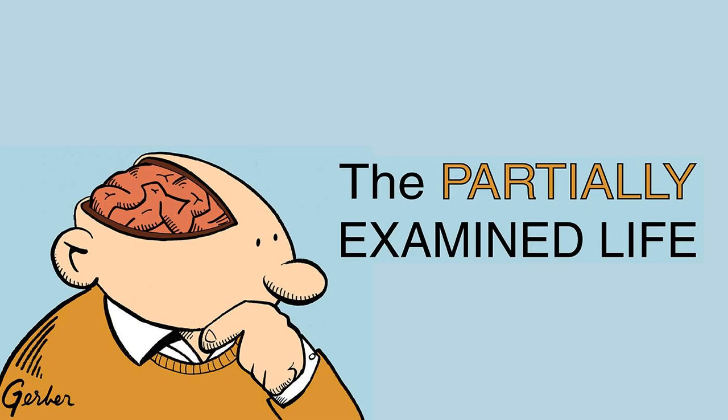You're listening to the Partially Examined Life, a podcast by some guys who at one point set on doing philosophy for a living but then thought better of it. Our question for episode 310 is, how do our presuppositions affect our picture of the world? We're continuing from episode 309 with our discussion of Ludwig Wittgenstein's On Certainty, written in 1951, published in 1969. For more information, please see PartiallyExaminedLife.com.